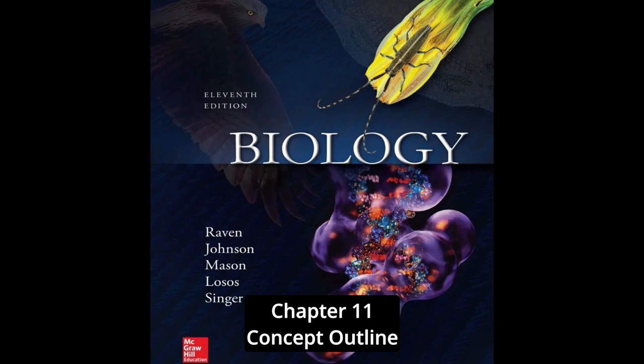In prophase, the chromosomes condense and microtubules attach sister chromosomes to opposite poles of the cell. In metaphase, chromosomes align along the center of the cell. In anaphase, the chromosomes separate. In telophase, the spindle dissipates and the nuclear envelope reforms. In cytokinesis, the cytoplasm separates into two roughly equal halves.